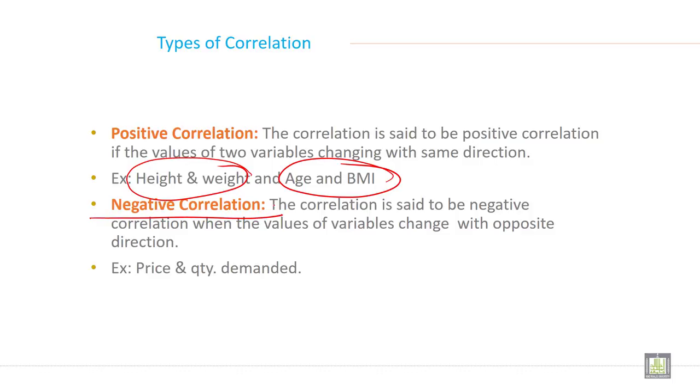What is negative correlation? The correlation is said to be negative when the values of variables change in opposite directions, like price and quantity demanded. It is changing in opposite direction. When price goes up, your demand will decline.